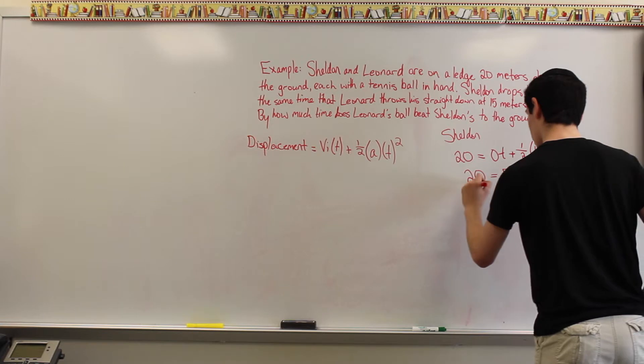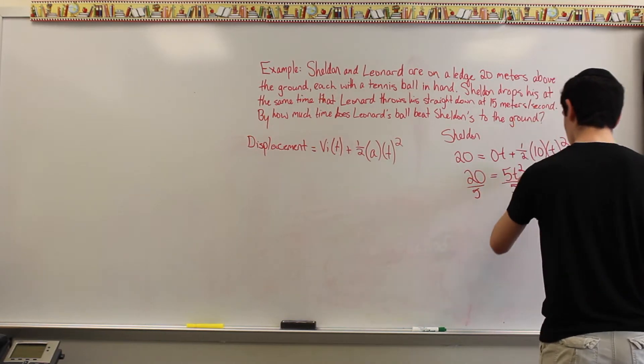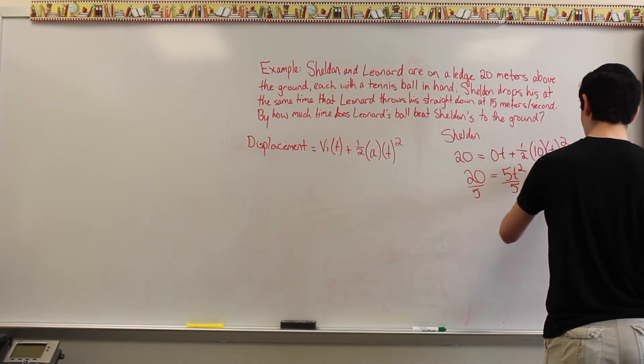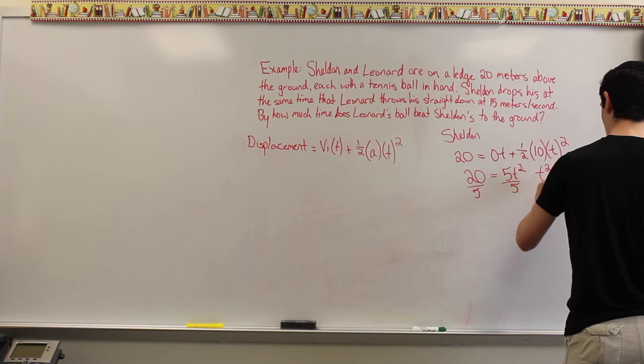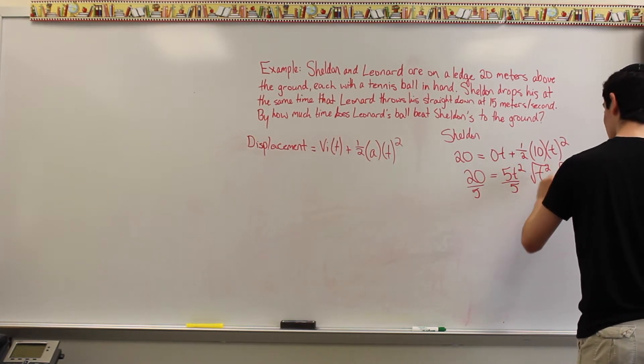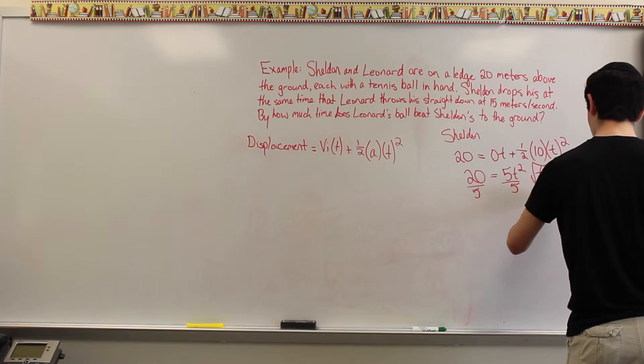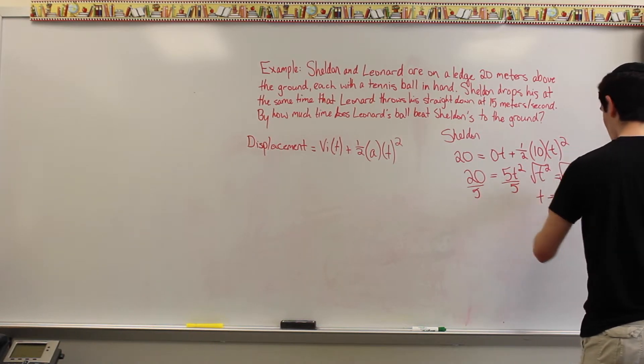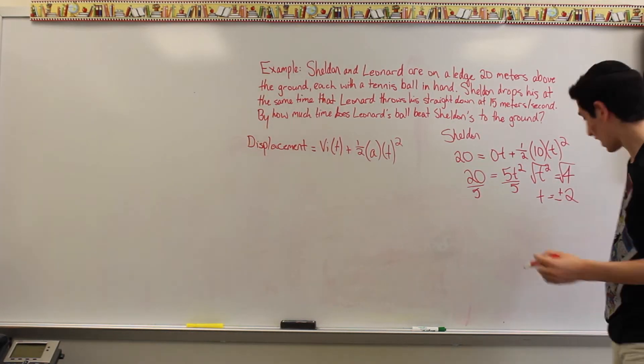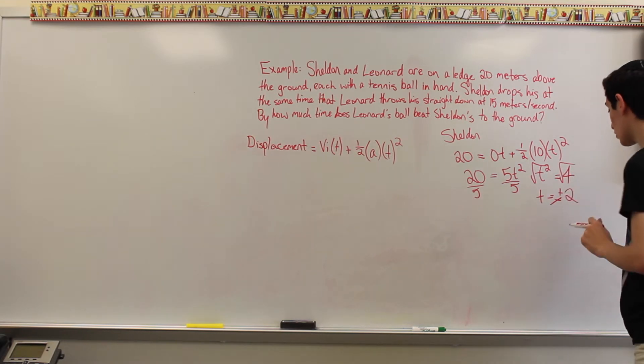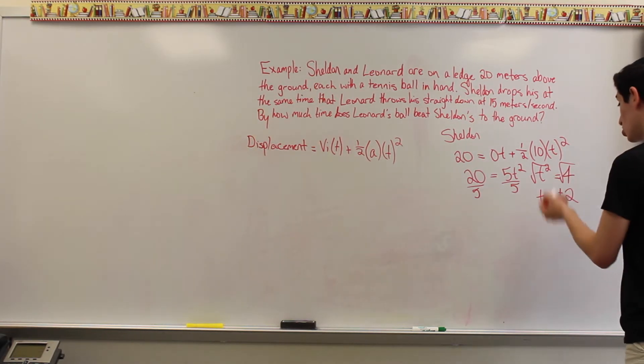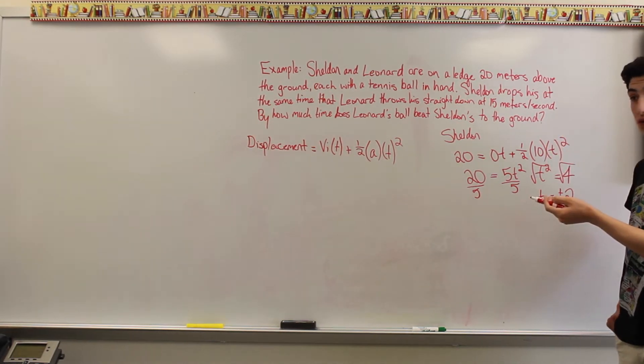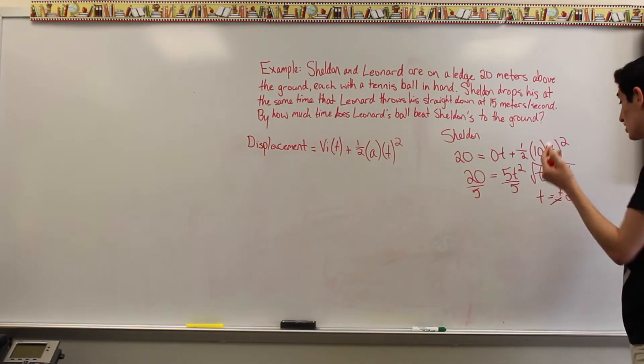If we divide both sides by 5, we have t squared equals 4, and if we take the square root of both sides, time equals positive and negative 2. However, you can't have negative time, so we're just going to reject the negative value. So, the time of Sheldon's ball hitting the ground from the ledge is 2 seconds.